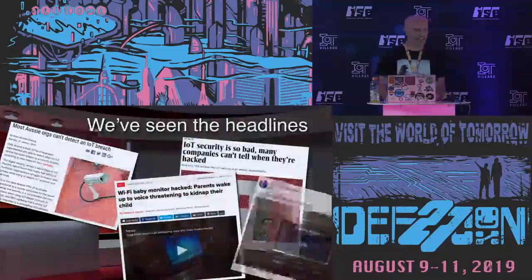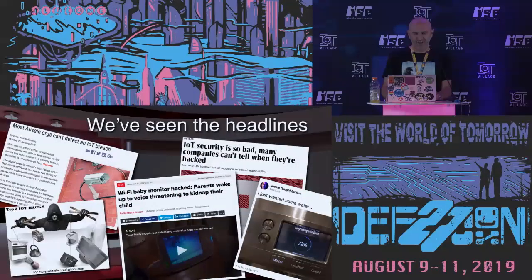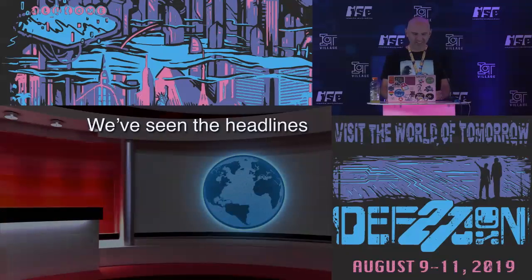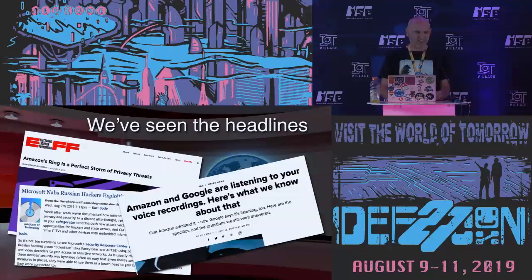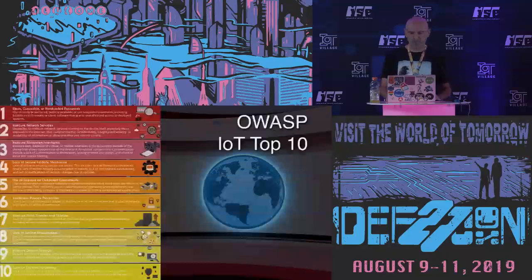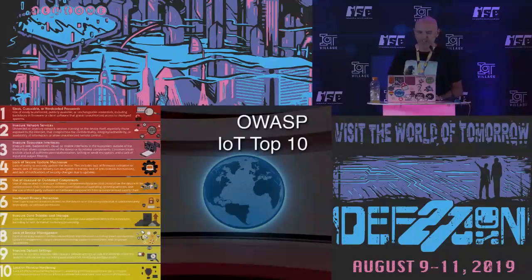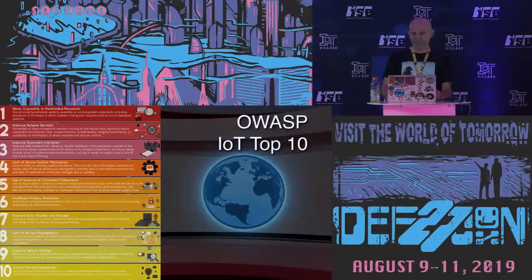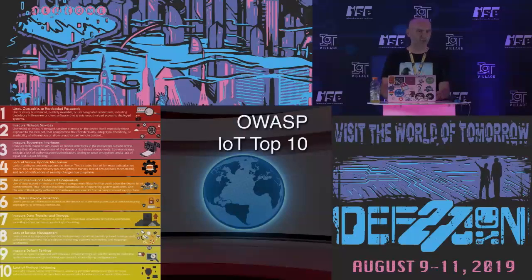We've seen the headlines — this mostly covers the sort of stuff we're seeing. The headlines now focus very much on Alexas and Google Homes recording things, and privacy concerns. A pretty good base for the main problems — and not a lot of people seem to realize this — is that OWASP have done an IoT-specific top 10. And it's actually pretty good. Based on what I've seen both within my own organization and others, I would say it's a fairly representative and characteristic overview of the core issues.